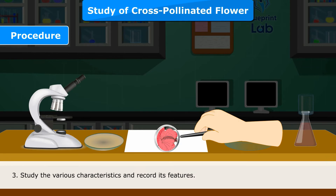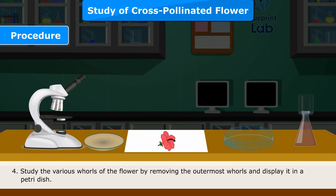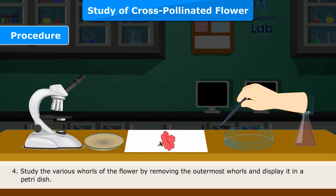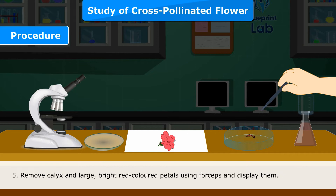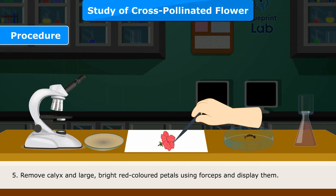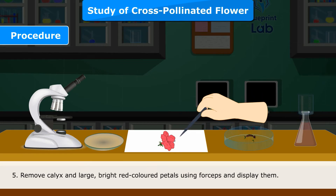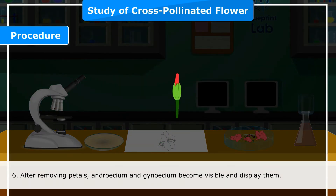Step 3 — Study the various characteristics and record its features. Step 4 — Study the various whorls of the flower by removing the outermost whorls and display them in a Petri dish. Step 5 — Remove sepals and large bright red-colored petals using forceps and display them.